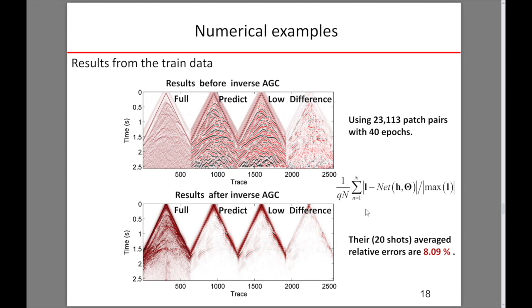In this example, we generate a total of 30 shot gathers and half of them are used for training. The rest are used for testing. In the training process, there are about 2,300 patch pairs used to train the network with 40 epochs. This slide shows the results from the training data. The two pictures show the predicted results before and after using inverse AGC. We notice that for both of them, the predicted data matched well with the true low-frequency data. The total of 20 shots have an average relative error of 8.09%. This shows the training process can map such a relationship successfully.